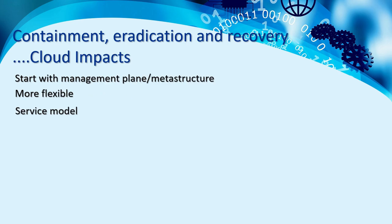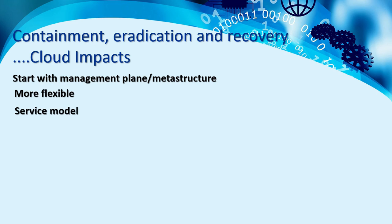Cloud impacts on containment and eradication: starting with the management plane and meta structure, it is very important to protect it and keep it free from attackers. This involves invoking the break glass procedure — just like when you break the glass of a rack in a physical data center to access all physical resources, similarly having root or admin access to resources in the management plane carries similar significance and must be protected from attackers. This phase is more flexible in the cloud as resources can be rebuilt quickly from scratch, thanks to software-defined infrastructure. For SaaS and some PaaS models, you have to rely on the providers and hence have some limitations.